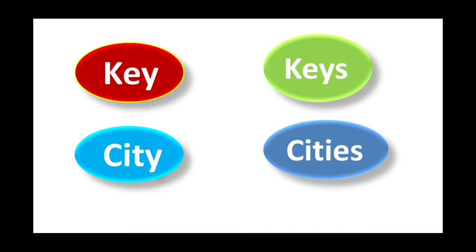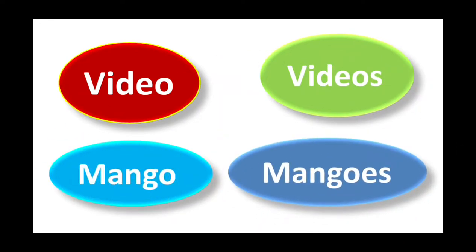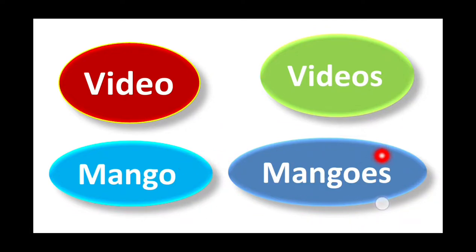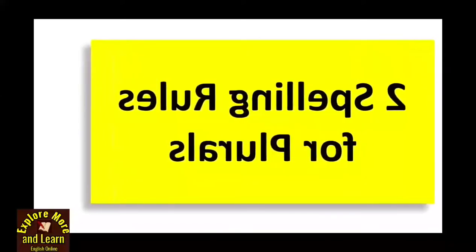A few more examples: 'video' and the plural is 'videos'; 'mango' and the plural is 'mangoes.' Both words are ending with the letter O — here we added S to make the plural, and here we added ES. Now you might be thinking: are there any rules to understand such differences, to avoid confusion while changing a singular to a plural noun? Don't worry — there are rules which I'll discuss in this video.